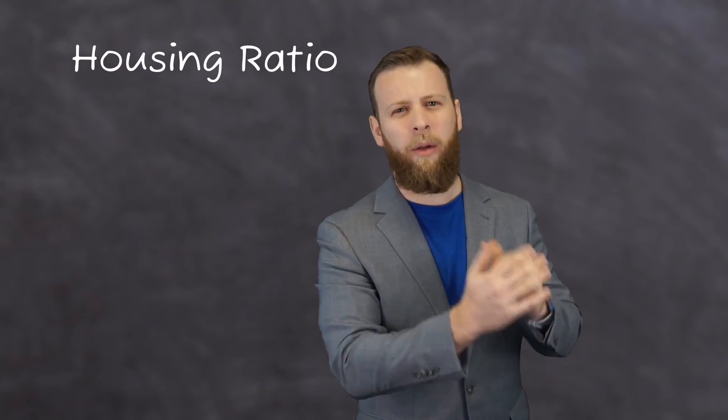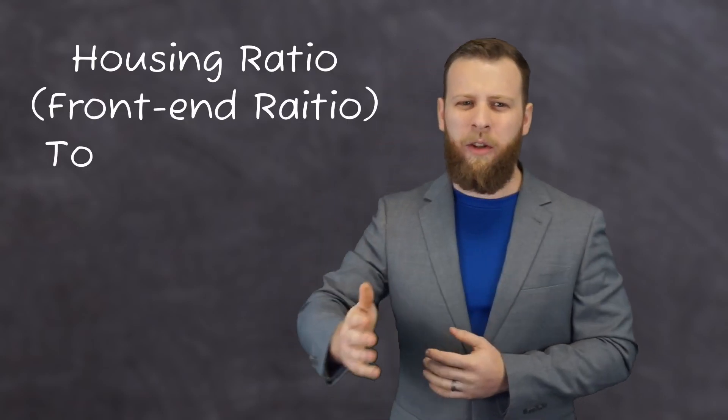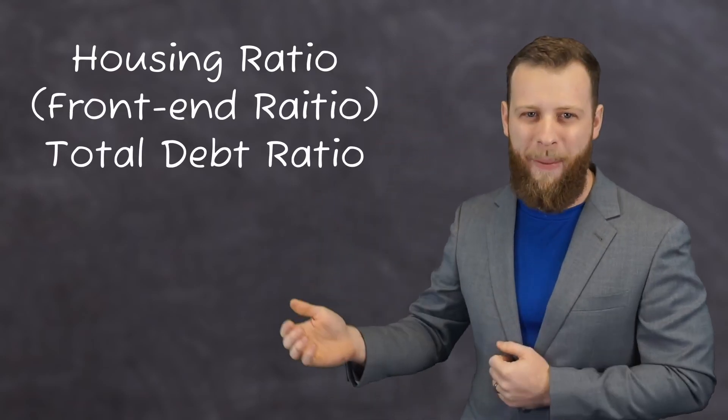In the mortgage world, there are two debt ratios a borrower needs to meet when we're assessing their ability to repay a loan. These are the housing ratio, or the front-end ratio, and the total debt ratio, also known as the back-end ratio.